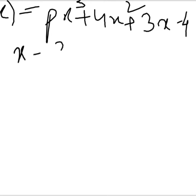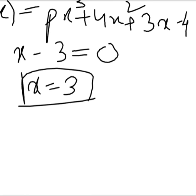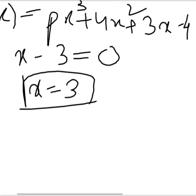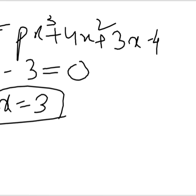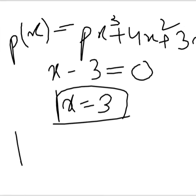...plus 3x - 4. This is the given first p(x). The divisor is x - 3. Normally we call that g(x), and we equate it to 0 to find the value of x. So x - 3 = 0 gives x = 3.